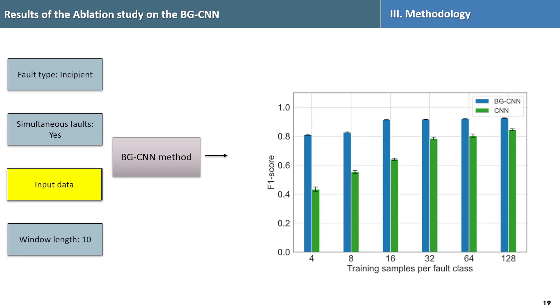Switching to input data, we compared using residual signals against raw sensor data. The BG-CNN method consistently outperformed the raw CNN data across different training sample sizes.